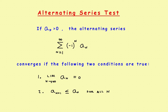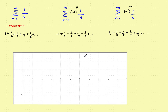Let's take this original positive series and plot the points of the sequence. The sequence is one over n, so the first term is 1, the second term is one-half, the third term is one-third, the fourth term is one-fourth, and so on. If I plot these red points, they approach the x-axis — they're getting smaller and smaller.